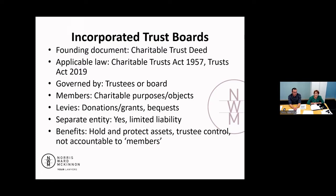You've got the trustees — individuals generally appointed as trustees — but they will act as a board. That will mean that the board, like a company or a society, is the entity that enters into contracts or transactions, and that is the entity that will be liable. The individuals won't be liable, as they would be if it was an unincorporated trust. The board will hold assets; if it owns land or other assets, it will hold them in the name of the board rather than the individual trustees.